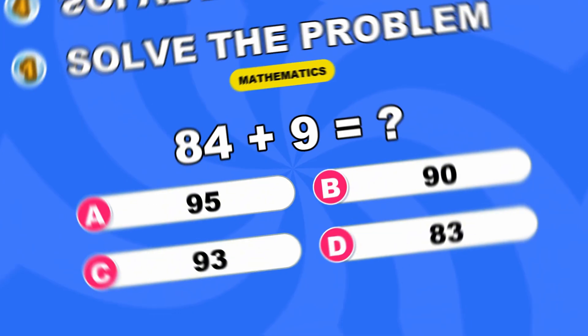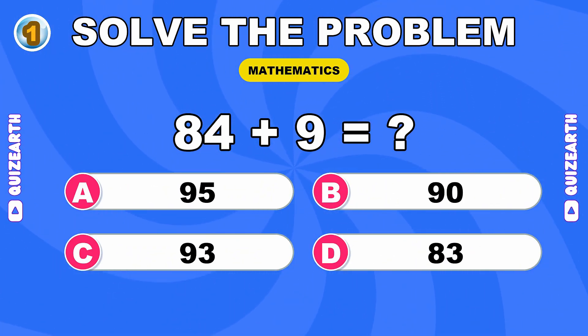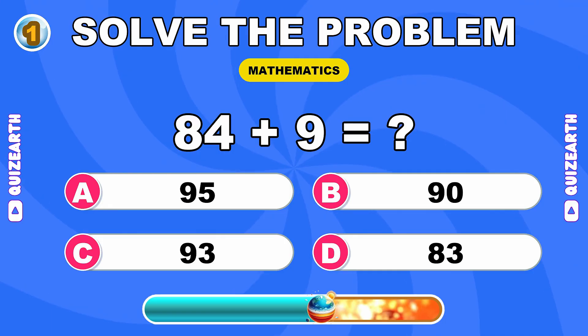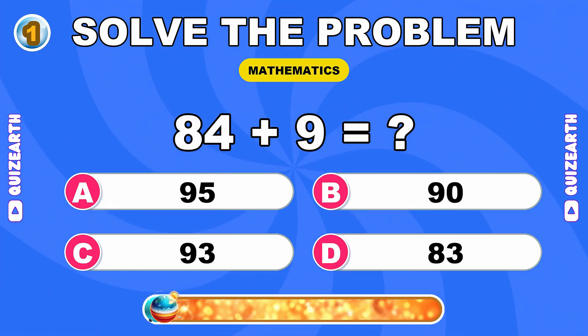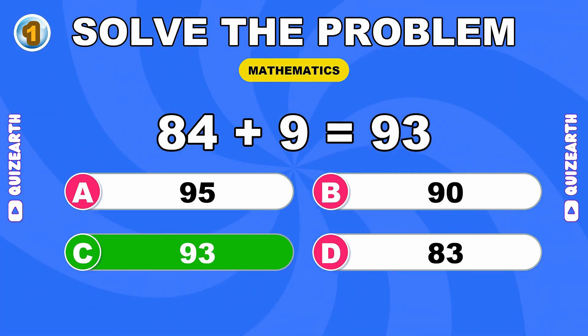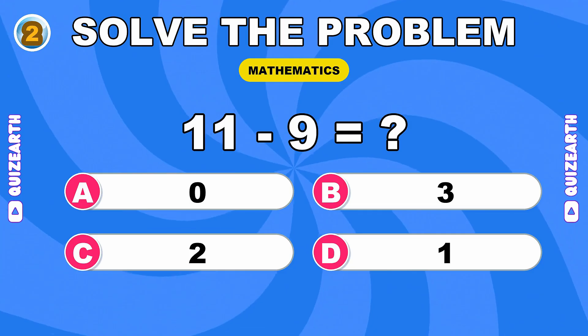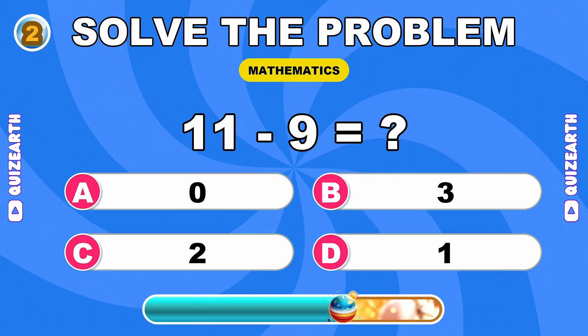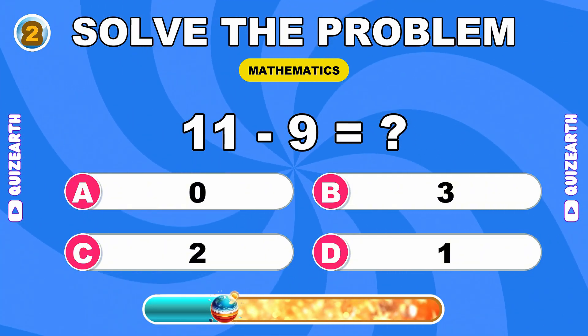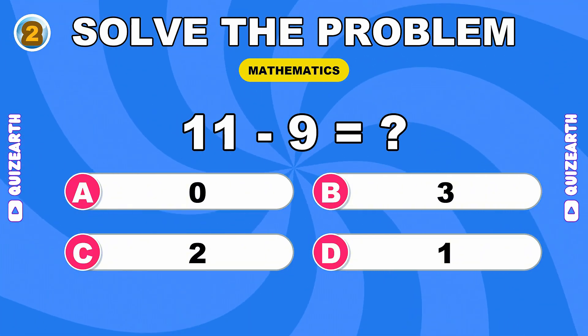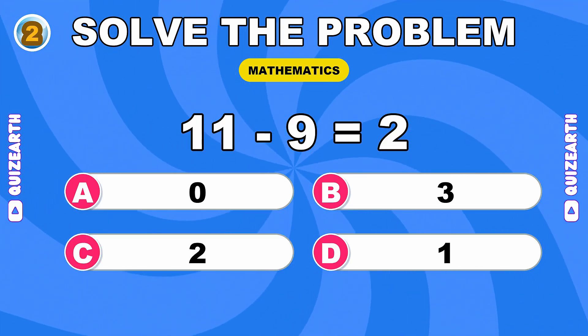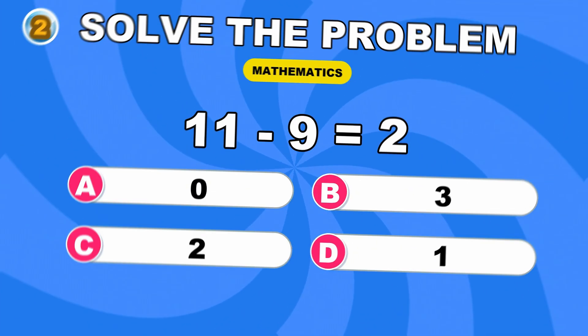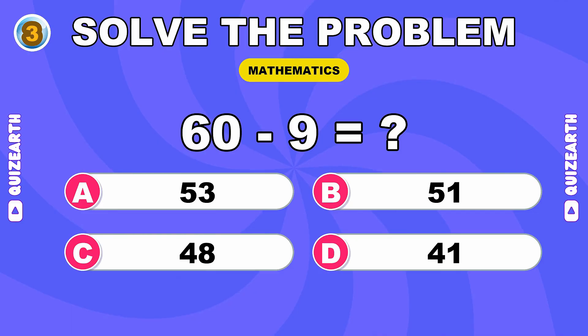What is 84 plus 9? Perfect, 93. What do you get when you subtract 9 from 11? Brilliant start, 2. How much is 60 minus 9?